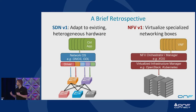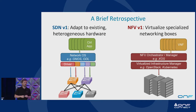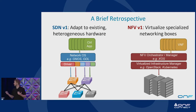If we look at the first generation of network functions virtualization, what we see is a theme around virtualization — taking the stuff we already had in our network and putting it in VNFs running on commodity compute. We've used common virtual infrastructure managers like OpenStack and Kubernetes, and we have orchestrators like XOS and OPNFV. The theme here is primarily adapt and virtualize.